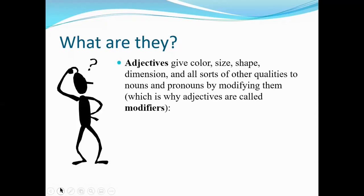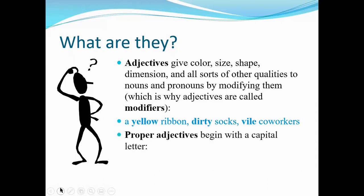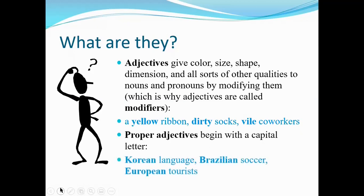Adjectives give color, size, shape, dimension, and all sorts of other qualities to nouns and pronouns by modifying them — which is why they're called modifiers. A yellow ribbon, dirty socks, vile co-workers. Proper adjectives begin with a capital letter, so 'Korean language,' 'Brazilian soccer,' or 'European tourists' all use capital letters because they come from proper names like Korea, Brazil, or Europe.